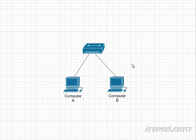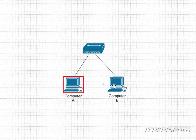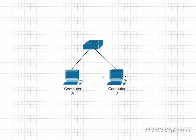Let's take a very simple example. We have two computers connected to a hub — remember this symbol is a hub. How many collision domains do we have? We only have one. That's because hubs do not break up collision domains. So if computer A tried to transmit at the same time as computer B, we'd probably have a collision.